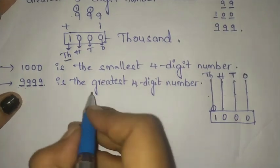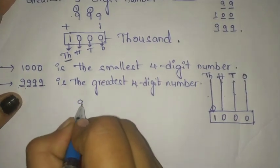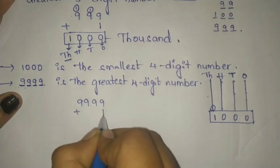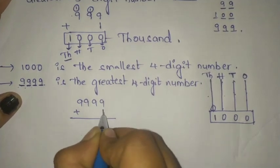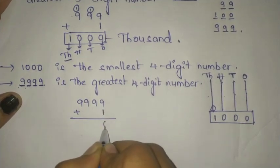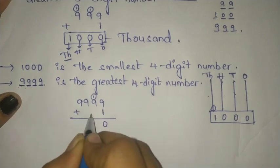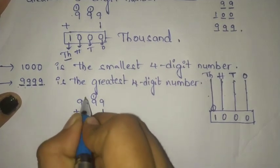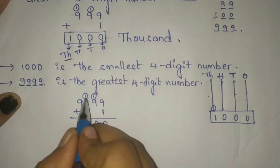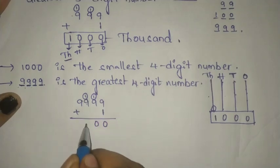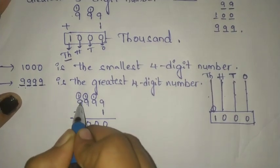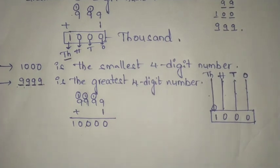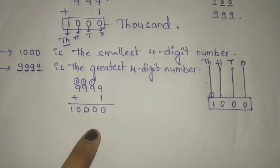If we add 1 to 9999, what will we get? Let's see: 9 plus 1 is 10, 0 here, 1 taken as carry. 9 plus 1 is 10, 0 here, 1 taken as carry. 9 plus 1 is 10, 0 here, 1 taken as carry. 9 plus 1 is 10. Yes, we got 10,000.